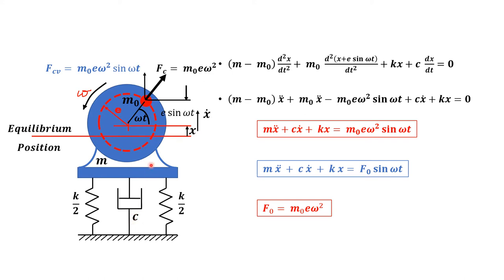Due to the unbalanced mass M0 rotating at angular speed omega, it will introduce a centrifugal force into the system. This centrifugal force Fc is given by the relation: mass M0, eccentricity E (the radius of rotation), and omega (the angular speed of rotation). So the relation becomes Fc = M0·E·ω².